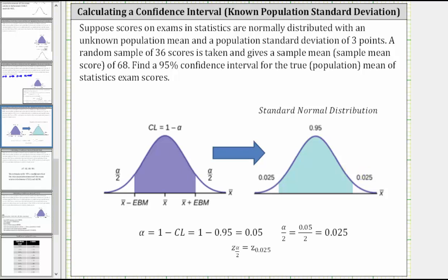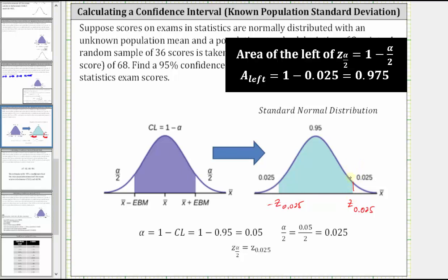The z-score we are looking for is this z-score here, which we indicate as z sub 0.025. On the left, the z-score would be negative z sub 0.025. And now to find this z-score using technology, you need to know the area to the left of this z-score, which we can see is equal to 0.95 plus 0.025, which we can also always find by taking one and subtracting alpha divided by two, which in this case is 0.025. So let's make a note here. The area to the left is 0.975.